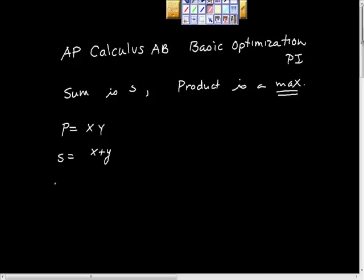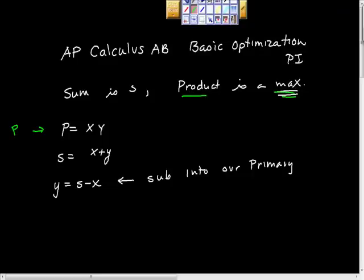Take the secondary equation and put it in terms of one of the variables. So I'm going to do that. I'm going to say that Y is equal to S minus X. So we're going to sub into our primary equation. And maybe that's what we should have done here is when we started, we should have gone, you know what? This one's primary. How do I know it's primary? Because the product is the max. So this is our primary and this is our secondary.